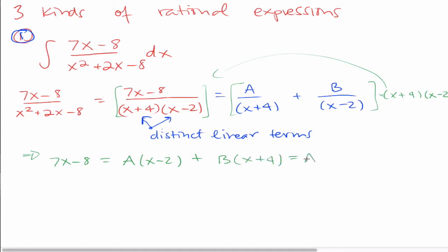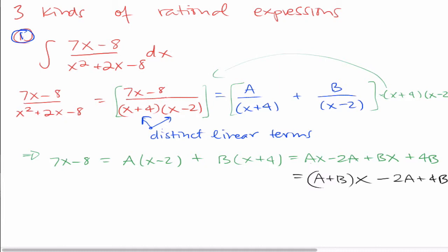So we multiply this through and have ax minus 2a plus bx plus 4b. This all has to add up to give me 7x minus 8. The ax and bx can be factored out: you get a plus b times x, and then minus 2a plus 4b. What you'll notice is that a plus b has to equal 7, and negative 2a plus 4b has to equal negative 8. So let's write those equations down: a plus b equals 7, and negative 2a plus 4b equals negative 8.